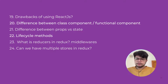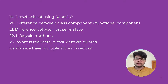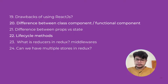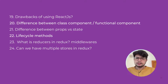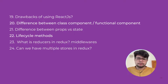The eighteenth was what happens if you update the state directly — again a straightforward question. The nineteenth was about the drawbacks of using React.js; he first asked about advantages, then drawbacks, and also how we can solve those issues using other frameworks or tools. The twentieth was a framework-level question about the difference between function and class components.